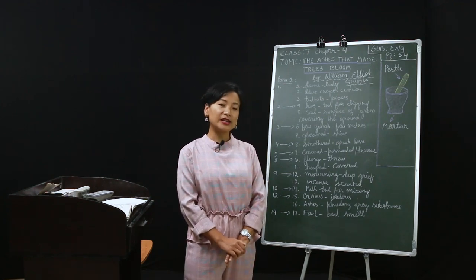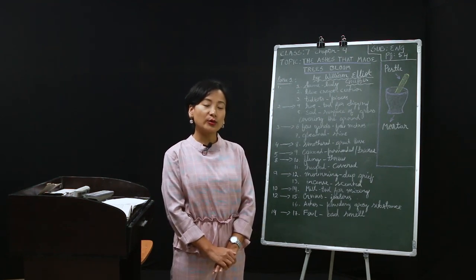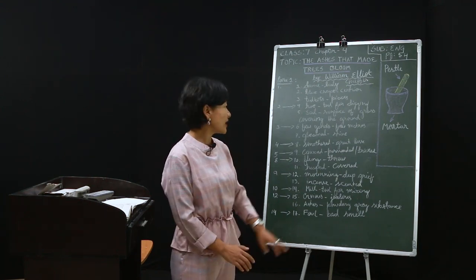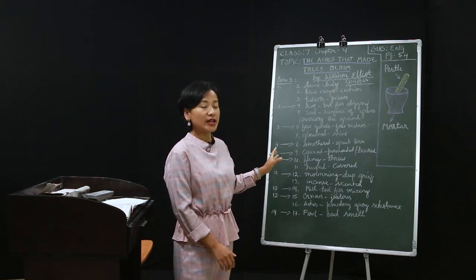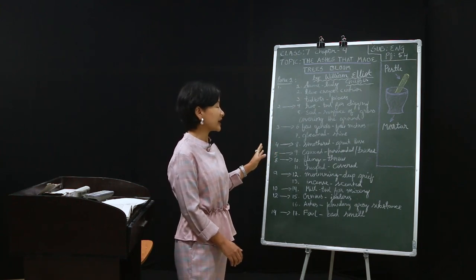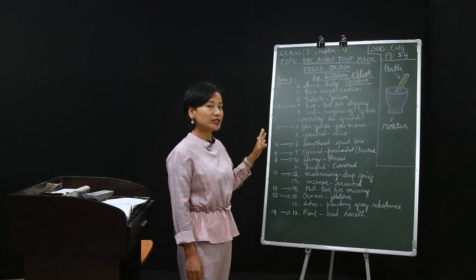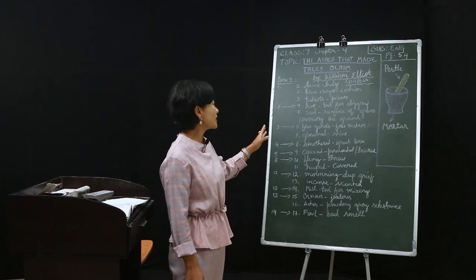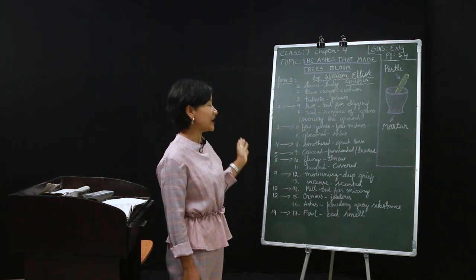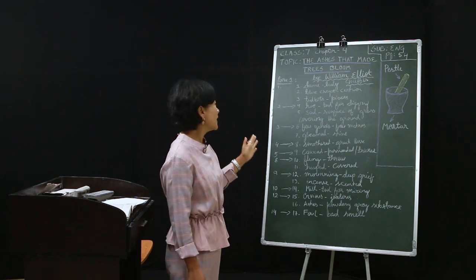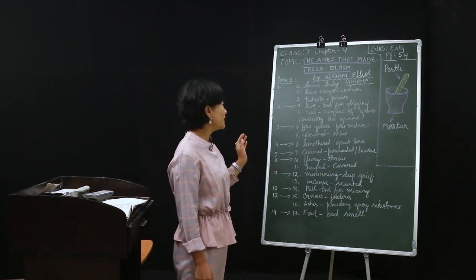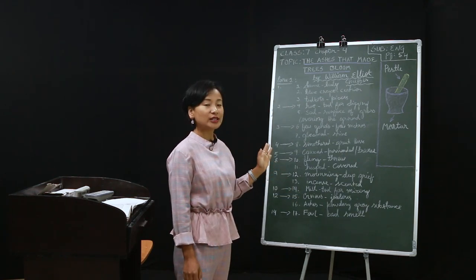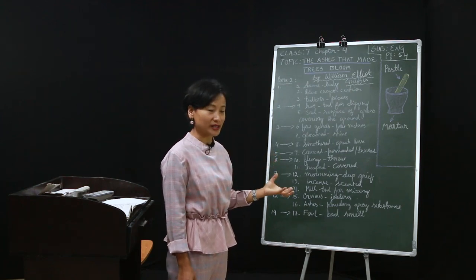Today's lesson is a little lengthy, so I would like to go a little fast so that we will be able to cover more. Here we have some new words and I'll be reading them out according to the paragraph. In the first paragraph, a new word is 'dame,' which means lady. Then 'blue crepe,' referring to a cushion made of blue colour. Then 'tidbits,' meaning bits and pieces.